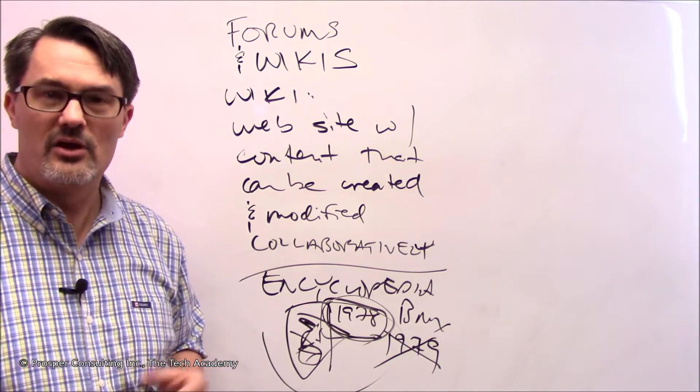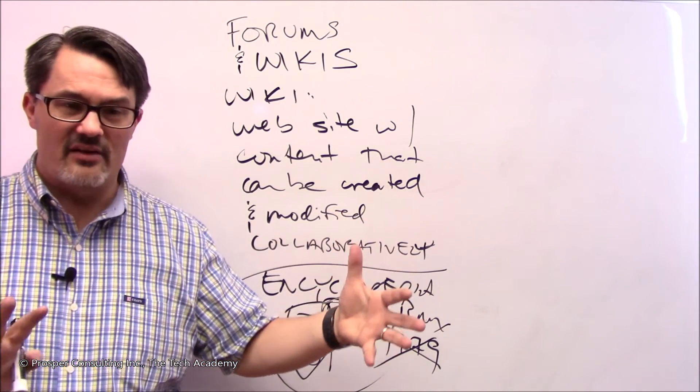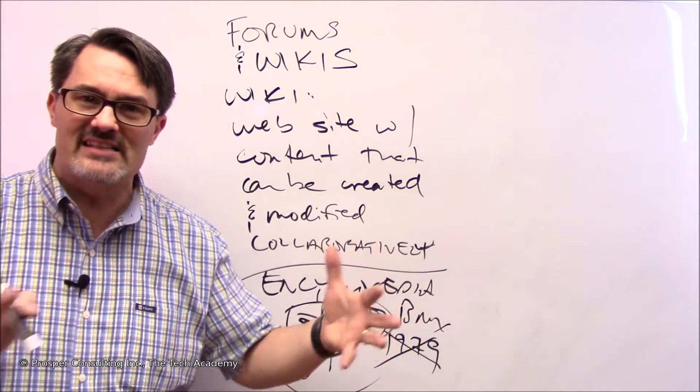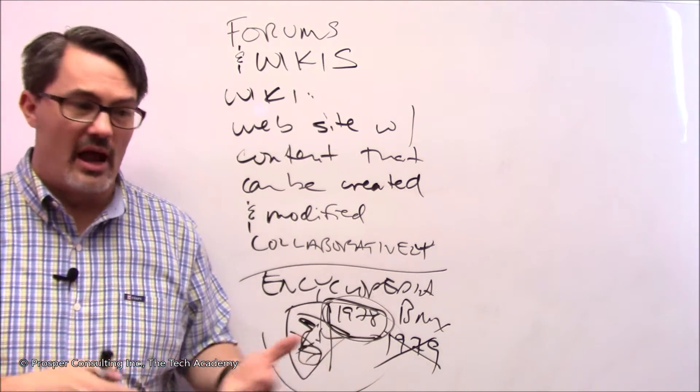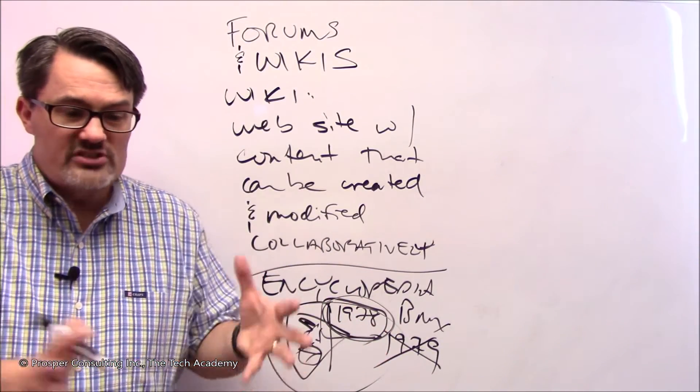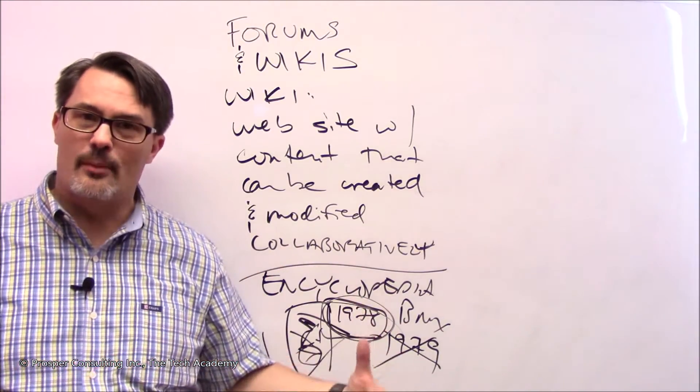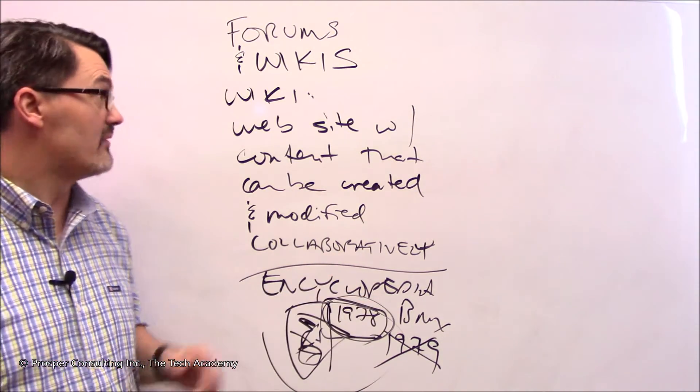Wikis are also used very often in corporations. Corporations, companies, assemble very often a large store of data that's just unique to that exact environment and very valuable. Let's say you're going to bring someone new into the company and there's a lot of history of the company, the way things are operated and that sort of thing, that you want to host in a place that anybody in the company can collaborate and add data to.